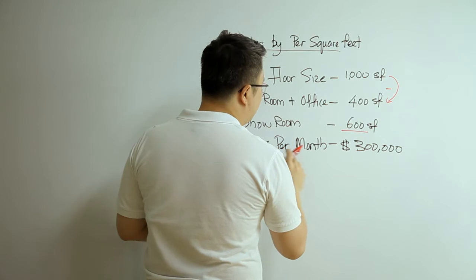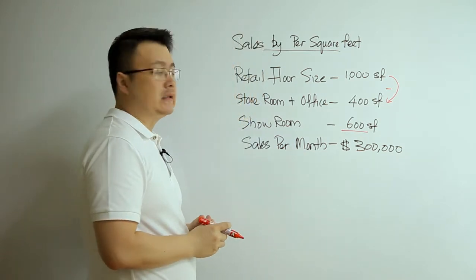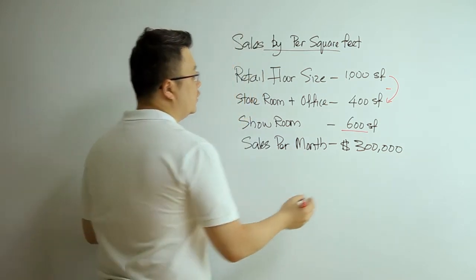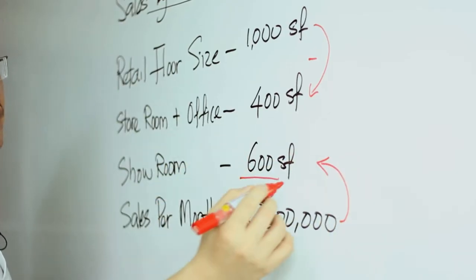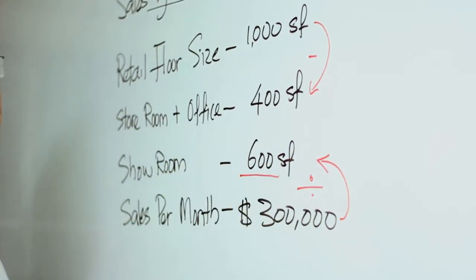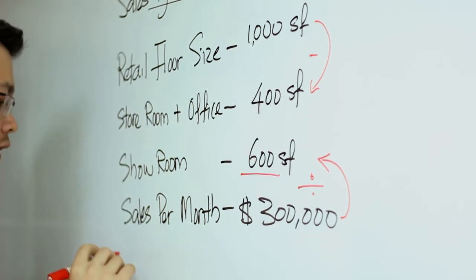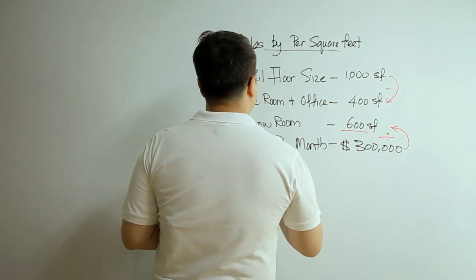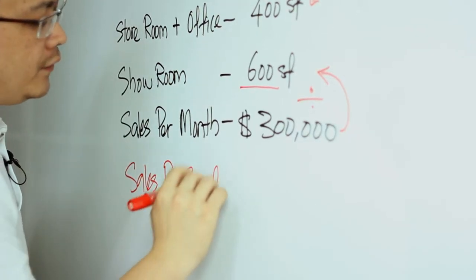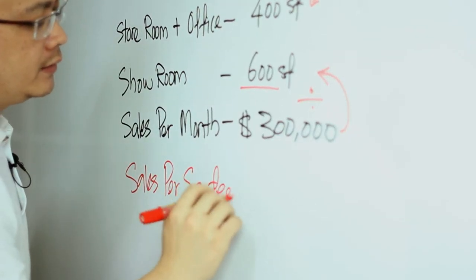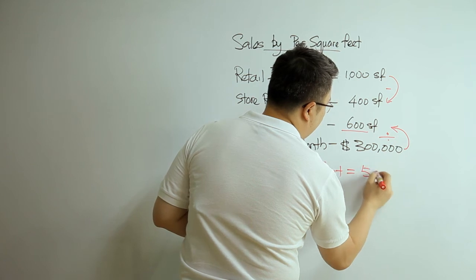Your sales per month is $300,000. So you take $300,000 and divide by the showroom area of 600 square feet, which means your Sales per Square Foot is $500.